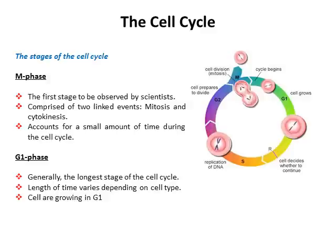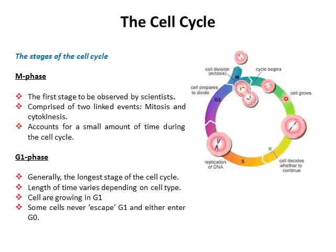In G1, cells are effectively just growing in size, getting ready for division. The trigger for replicating DNA is linked to the actual size of the cell in some organisms, such as yeast. It's important to realize that some cells actually never escape G1 — never progress to S phase. Instead of deciding to replicate their DNA, these cells exit the cell cycle at G1 and enter a phase called G0. This is also referred to as quiescent — the cells have decided there's no interest in continuing to divide at this point.